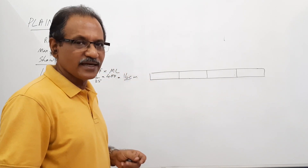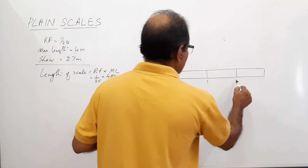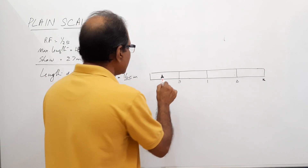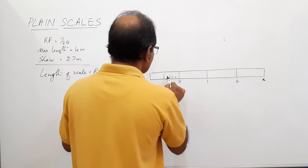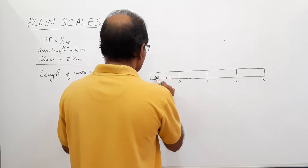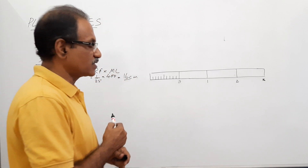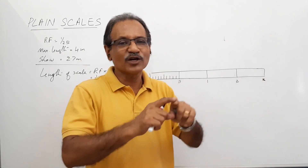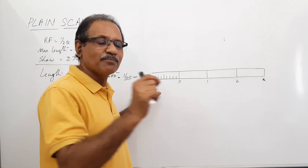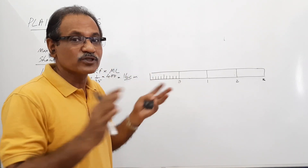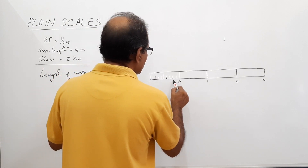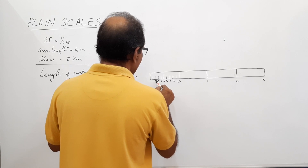This represents 4 meters. I write 0, 1, 2, 3 — each piece represents 1 meter. I divide the leftmost division into 10 equal parts. This is 16 centimeters; you can divide it into 4 equal parts by marking 4 centimeters apart, and subdivide the leftmost part by marking 4 millimeters apart for the 10 equal parts. Mark 1 through 10.